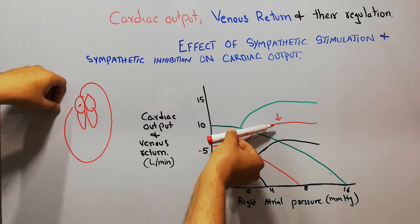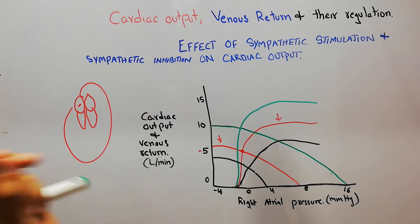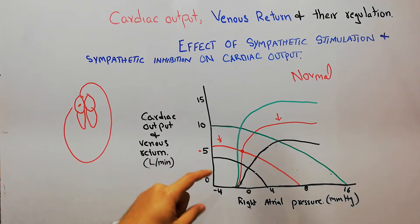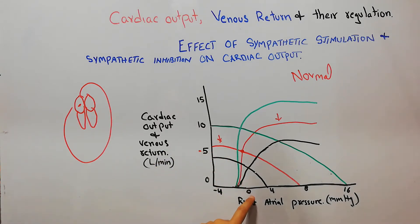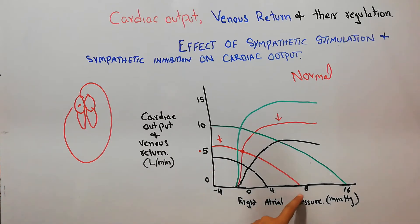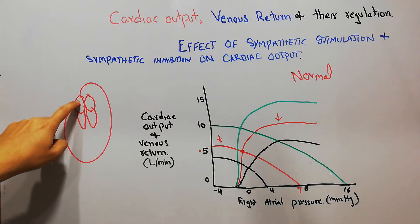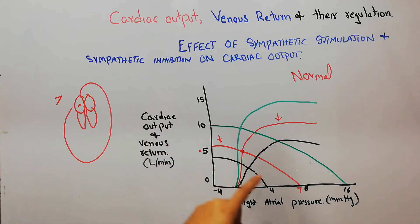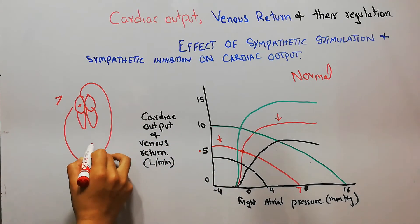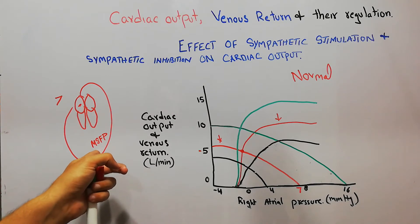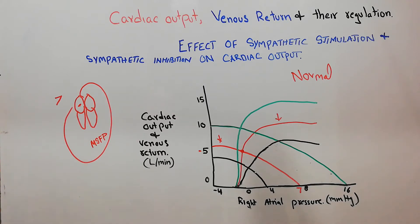As right atrial pressure starts increasing, there is initially an increase in cardiac output, but with further increase there is a plateau — no more increase in cardiac output under normal circumstances. Similarly, venous return starts at a high level, and at a right atrial pressure of zero millimeter of mercury, venous return is also 5 liters per minute. When right atrial pressure increases to around 7 mmHg, venous return becomes zero, because the mean systemic filling pressure — the force pushing blood toward the right heart — is normally 7 mmHg.